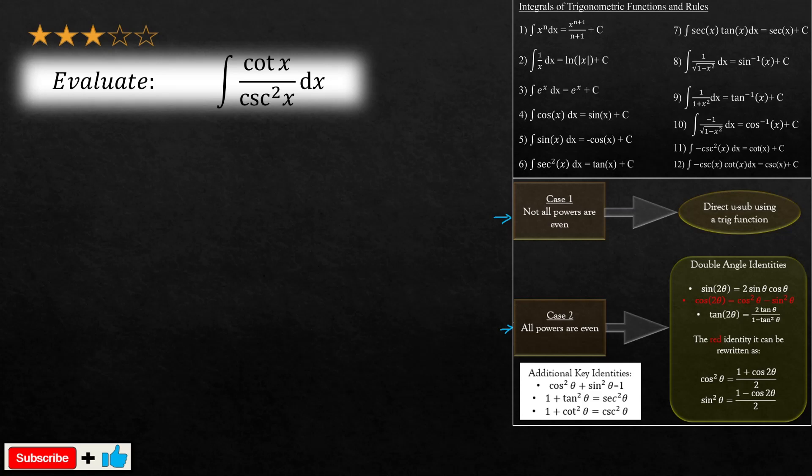We're going to do it right away. We know that cotangent of x can be rewritten as the following: it could be rewritten as cos of x divided by sine of x, very important.